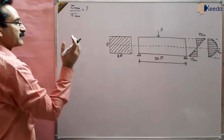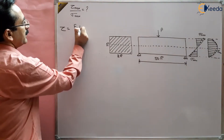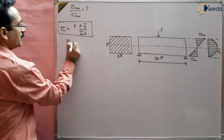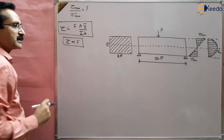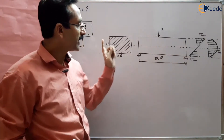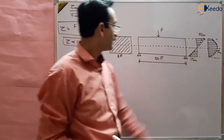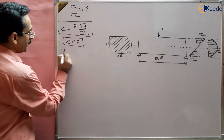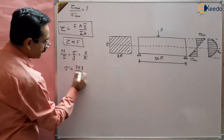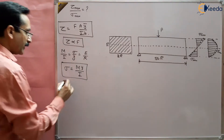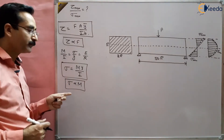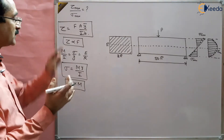We need to find tau_max and sigma_max. Shear stress is given by τ = FAȳ / Ib, so shear stress is proportional to shear force F. Higher shear force means higher shear stress. Also from the bending equation M/I = σ/y = E/R, bending stress is σ = My/I, proportional to bending moment. So bending stresses are maximum where bending moment is maximum. We need to find maximum bending moment and maximum shear force.